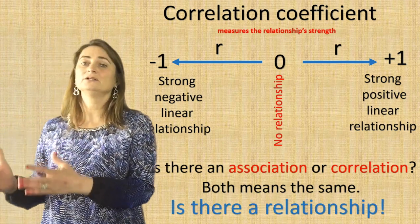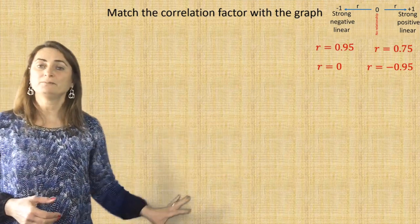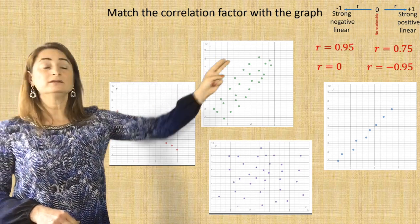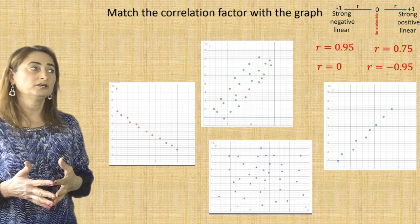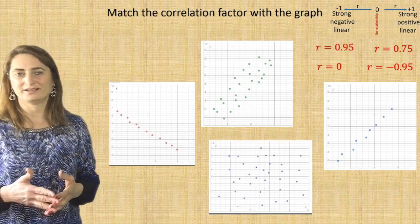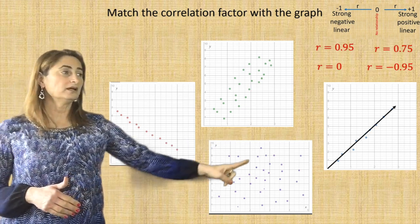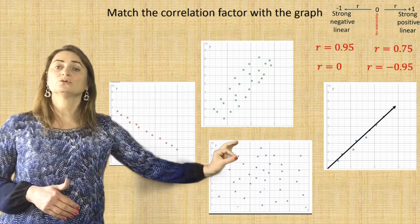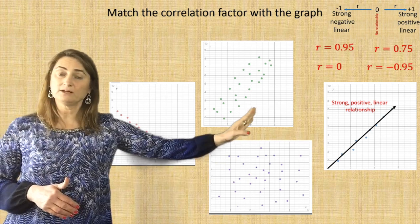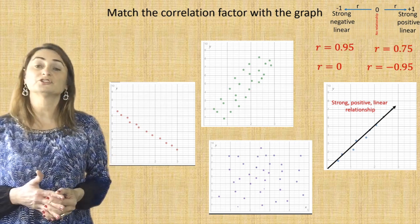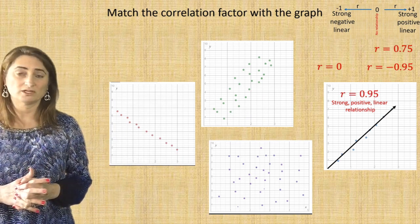Now here are four different examples of a scatterplot. Match the correlation coefficient with the graph. We have R equals 0.95, R equals 0.75, R equals 0, and R equals negative 0.95. For the first example, if I draw the line of best fit, watch how that line is very close to all the dots on the graph. It's strong because all the dots are close together, positive because it's going up, and it's a linear relationship. So the correlation coefficient is R equals 0.95 — very close to positive one, a strong positive linear relationship.